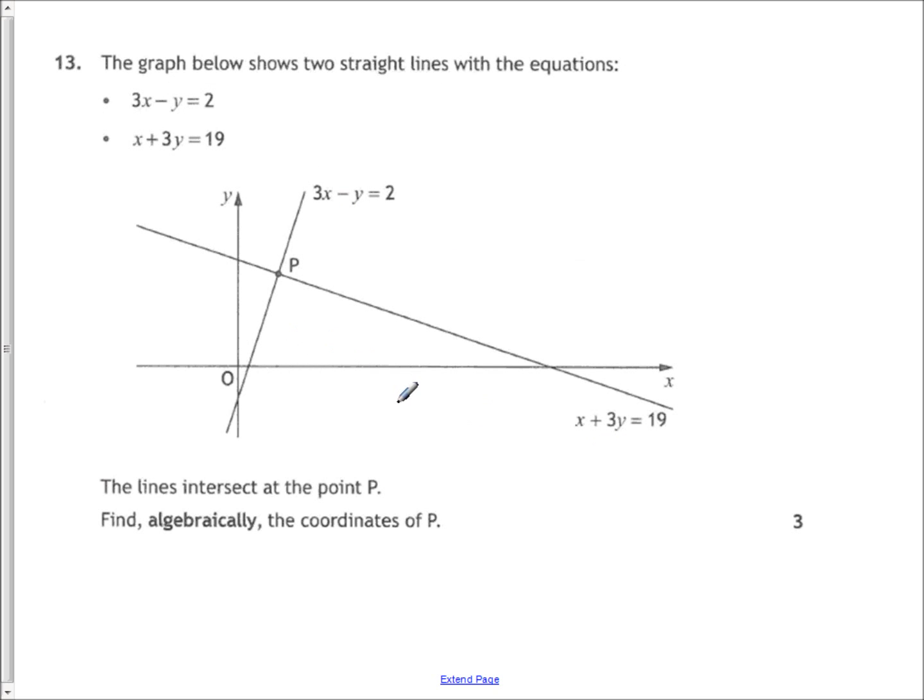Two lines. You want to find algebraically where the two lines meet. So in other words you want to find the point where the two x and y values would be the same. So it's simultaneous equations. So you can either just use substitution. Or you can just make either the first terms or the middle terms match and take it from there. So straightforward. It shouldn't cause you any bother.